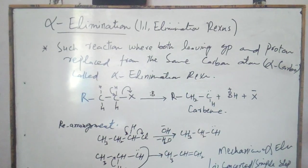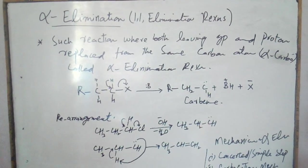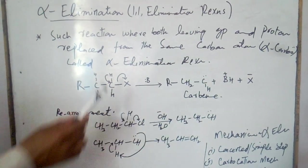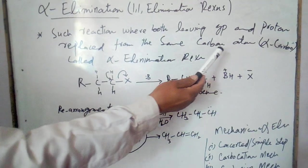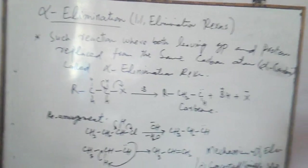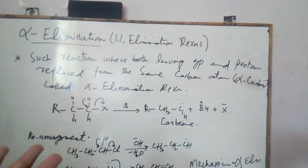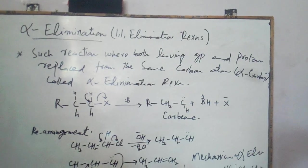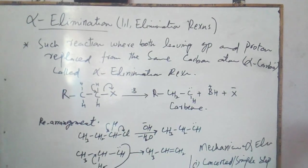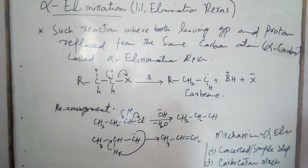Alpha elimination or 1-1 elimination reactions occur when both the leaving group and proton are replaced from the same carbon atom or alpha carbon. In beta elimination reactions, the leaving group is replaced from one carbon and the proton is replaced from the adjacent beta carbon to give the elimination product.